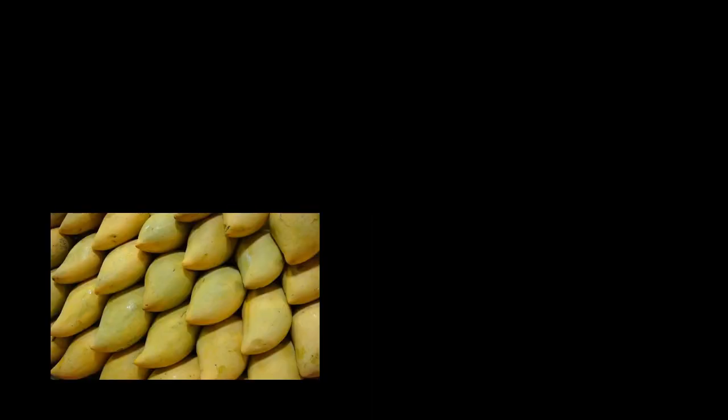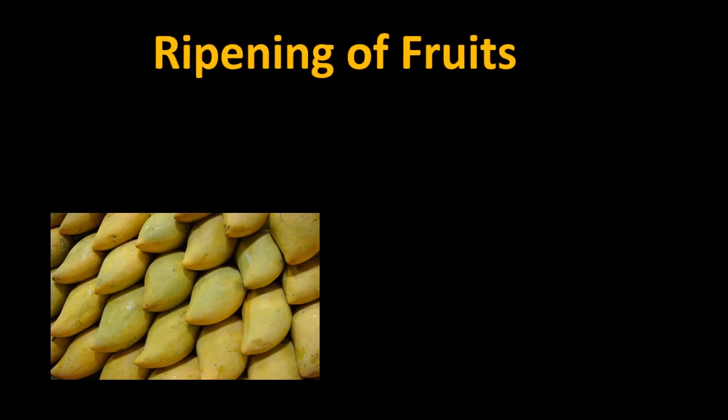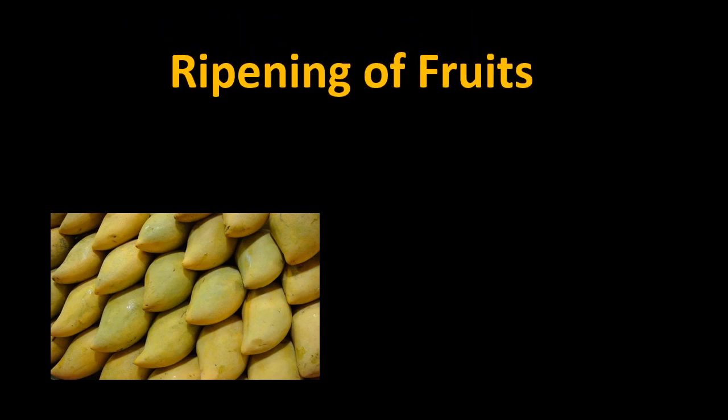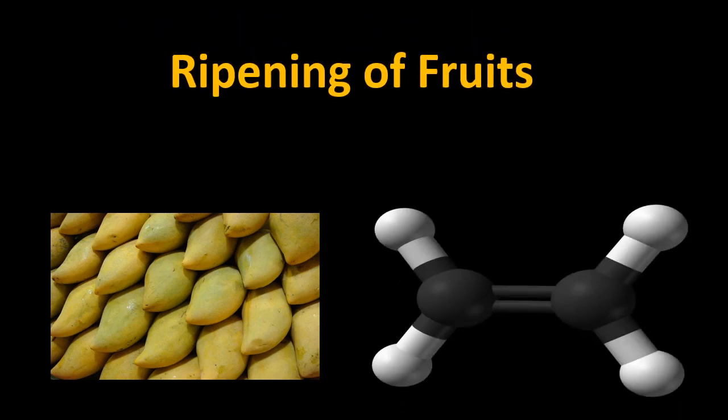The most important alkene is Ethene. Ethene is a two-carbon compound having a double bond in it. For the two carbons we use the word 'Eth' and the double bond is represented by 'ene', so it's named as Ethene.